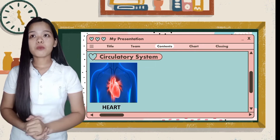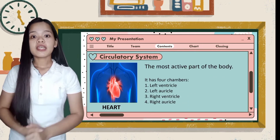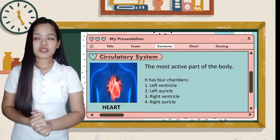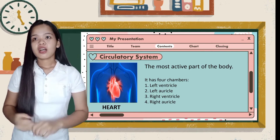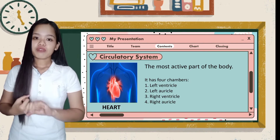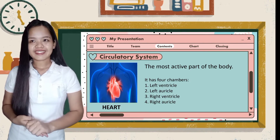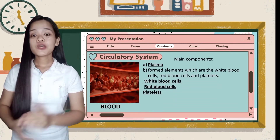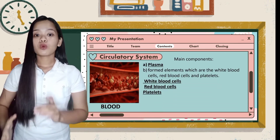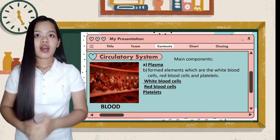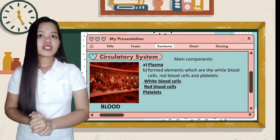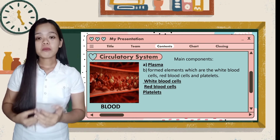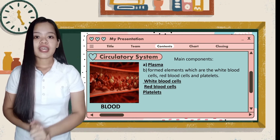The heart is the most active part of the body. It is as big as your own clenched fist and has four chambers: the left ventricle, left auricle, right ventricle, and the right auricle. The main components of blood are plasma — which is liquid, 90% water — proteins such as albumin, clotting factors, antibodies, dissolved nutrients, and electrolytes, as well as formed elements which are the white blood cells, red blood cells, and platelets.